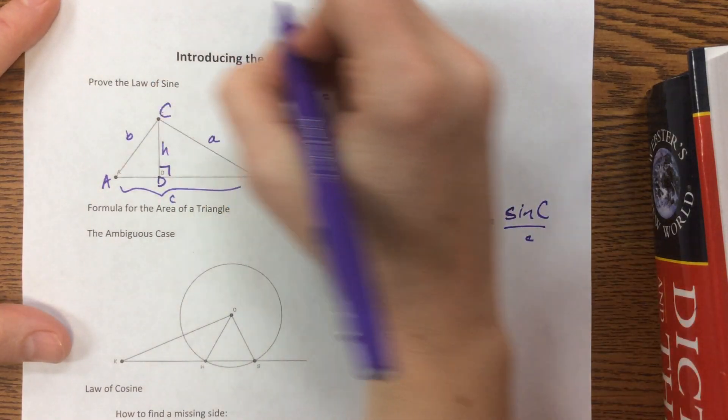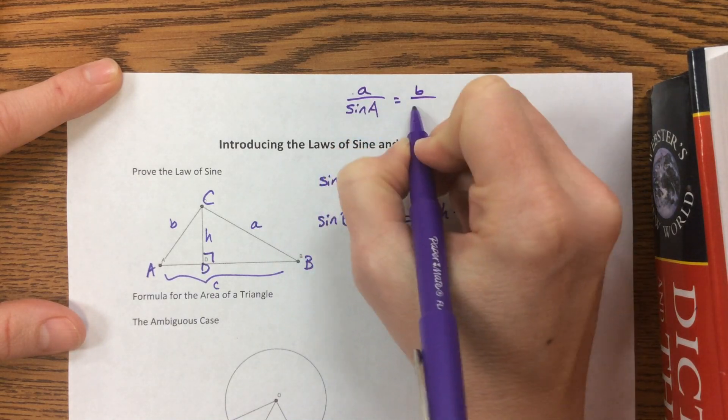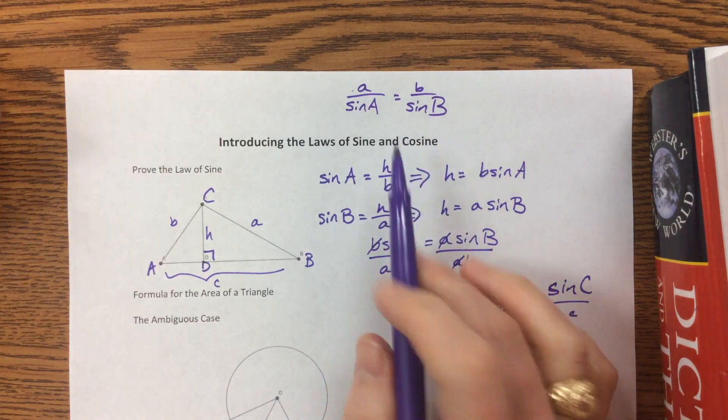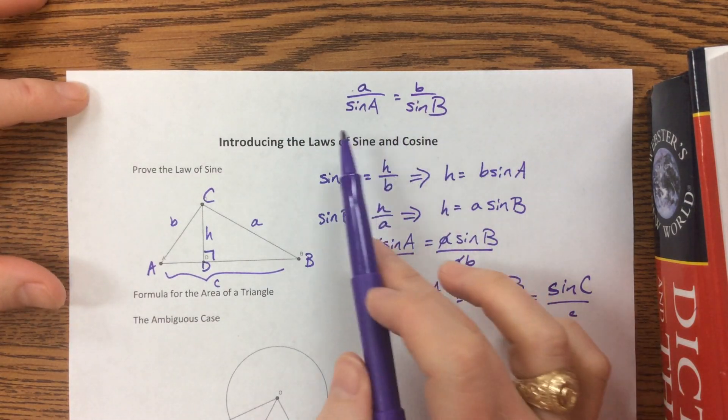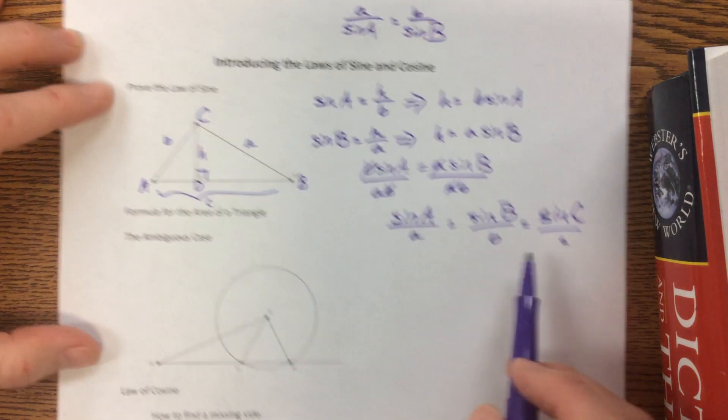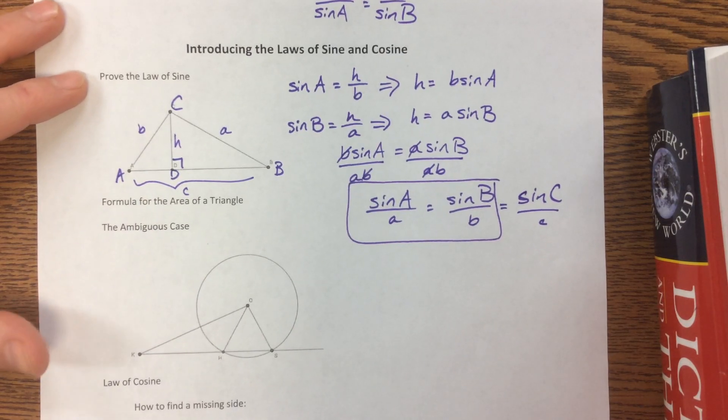Sometimes I have seen some books that write it this way, they'll say A over sine A equals B over sine B. That's fine, it's just not my go-to. So by all means, help yourself out. But this right here is typically what we call, we refer to when we talk about the law of sine.